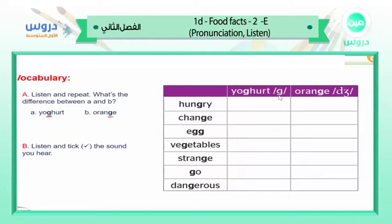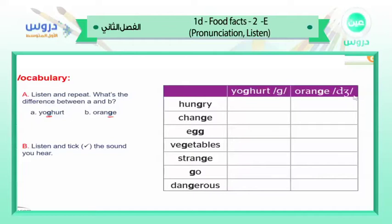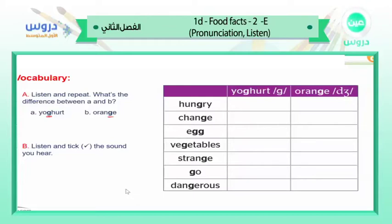I want to say something very important. This is the sound 'ga' — I'm talking about the sound, not the letter. The sound 'ga' we write it this way. This is the symbol for the sound 'ga.' But this other symbol represents the sound 'ja,' 'ja,' 'ja.' Now listen everyone.